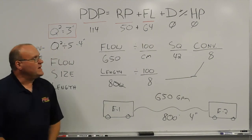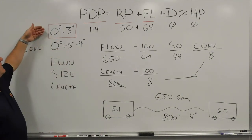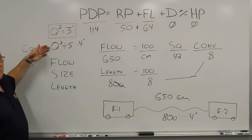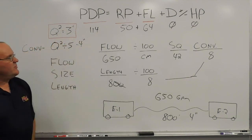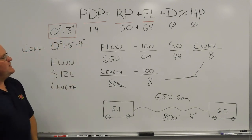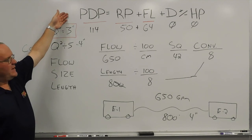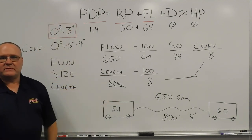That's the quick and dirty training minute using the hand method with conversion factor for 4-inch hose to get the friction loss and calculate the pump discharge pressure for a relay from engine 1 to engine 2. Thank you.